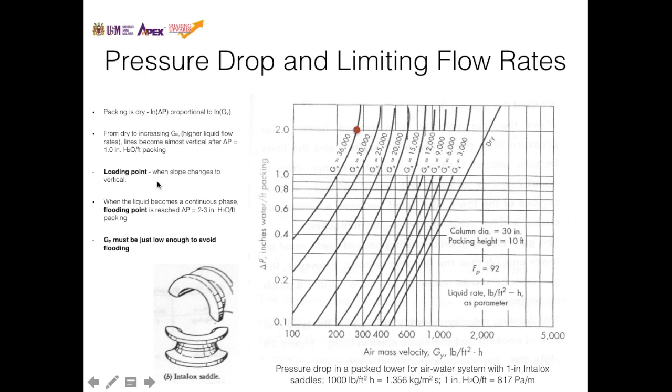A few definitions: loading point is when the slope changes to vertical. For example, this is a line with a slope, but as you increase the solvent flow rate, you see that the slope becomes almost vertical, such as here. When the liquid becomes a continuous phase, or when the pressure drop is high, the flooding point has been reached. In this case, it's about 2 to 3 inches of water per feet of packing. So GY must be just low enough to avoid flooding.